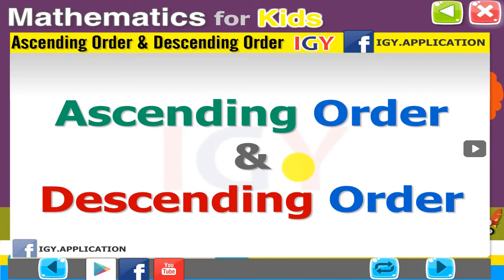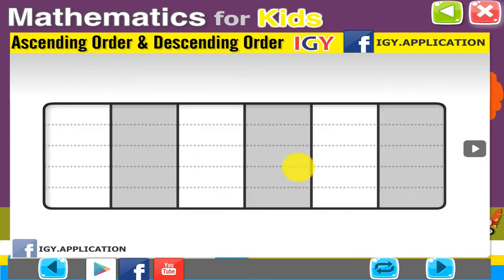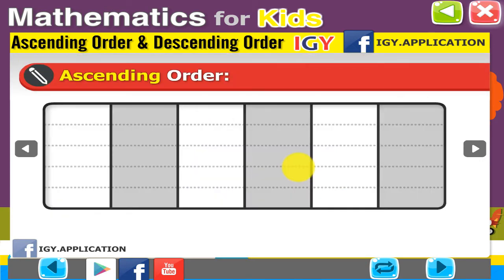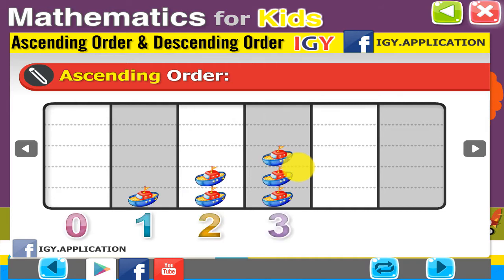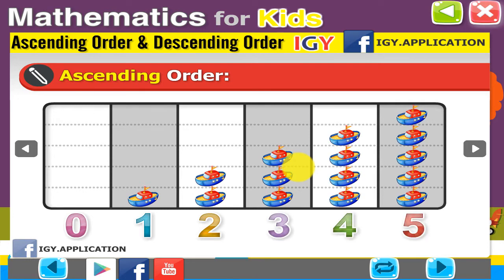Ascending order and descending order. Ascending order: 0, 1, 2, 3, 4, 5 — from the smallest to the greatest.